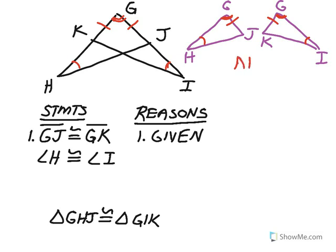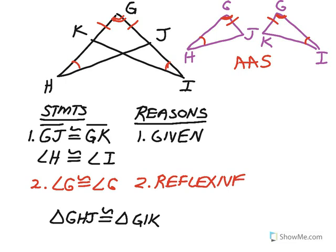So I've got two angles and a non-included side — I have an Angle-Angle-Side congruence for the two triangles. The second step to add to the proof is that angle G, included in both triangles, is congruent to itself by the Reflexive Property. Therefore, triangles GHJ and GIK are congruent by the Angle-Angle-Side theorem. That's a little example of how that works.